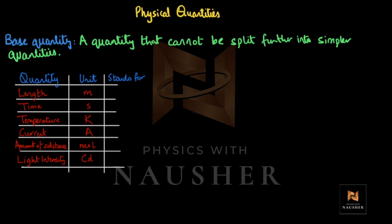Refer to this table whenever you have a confusion — for example, if the length unit is in kilometers and you need to convert it, or the current is in milliamperes and you need it in amperes. Always go back to this table. The SI unit for length is meter, time is second, and temperature is Kelvin.